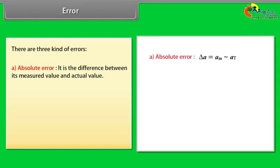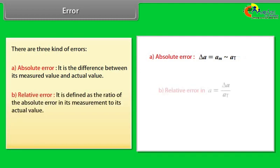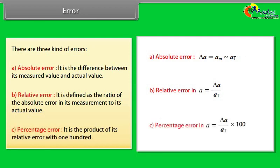Precision tells us to what resolution or limit the quantity is measured. There are three kinds of errors: Number one, absolute error - it is the difference between its measured value and actual value. Number two, relative error - it is defined as the ratio of the absolute error in its measurement to its actual value. Number three, percentage error - it is the product of its relative error with one hundred.